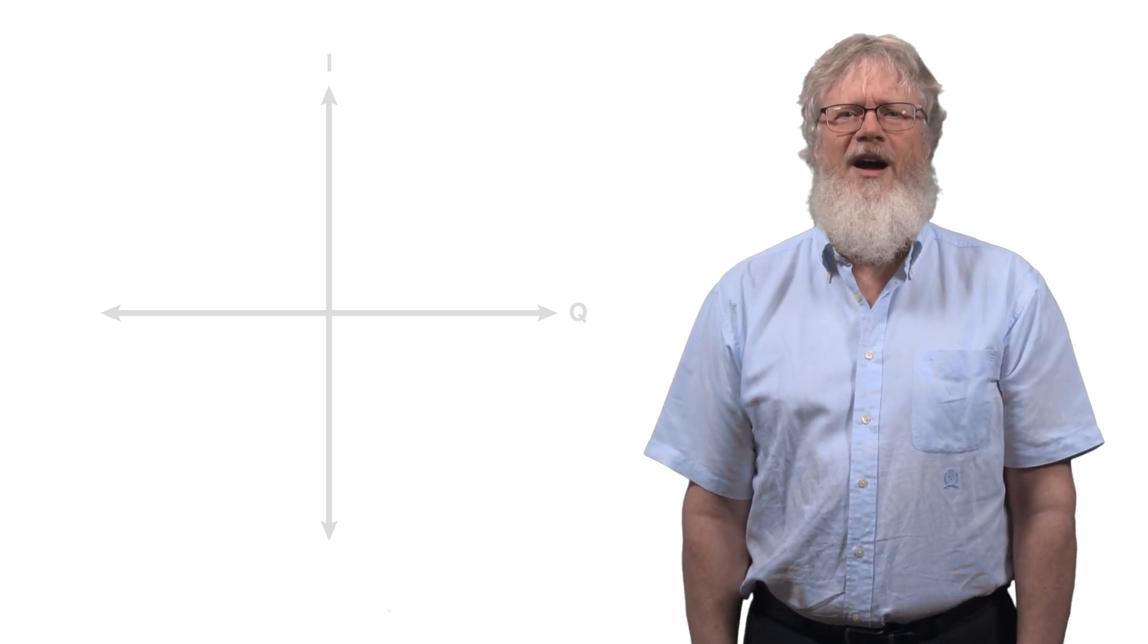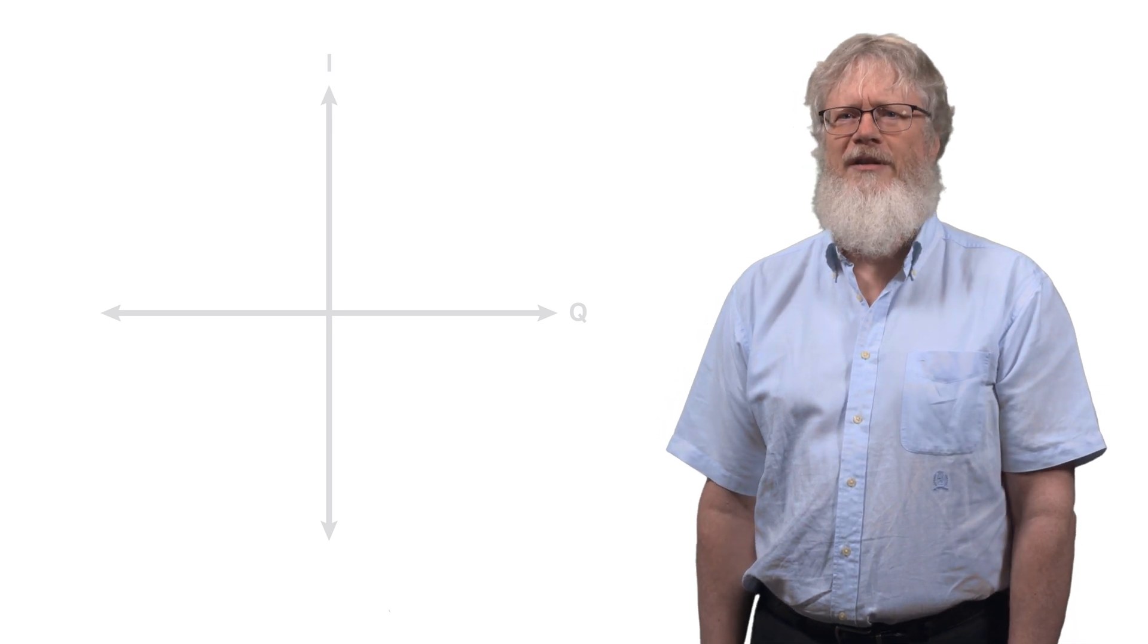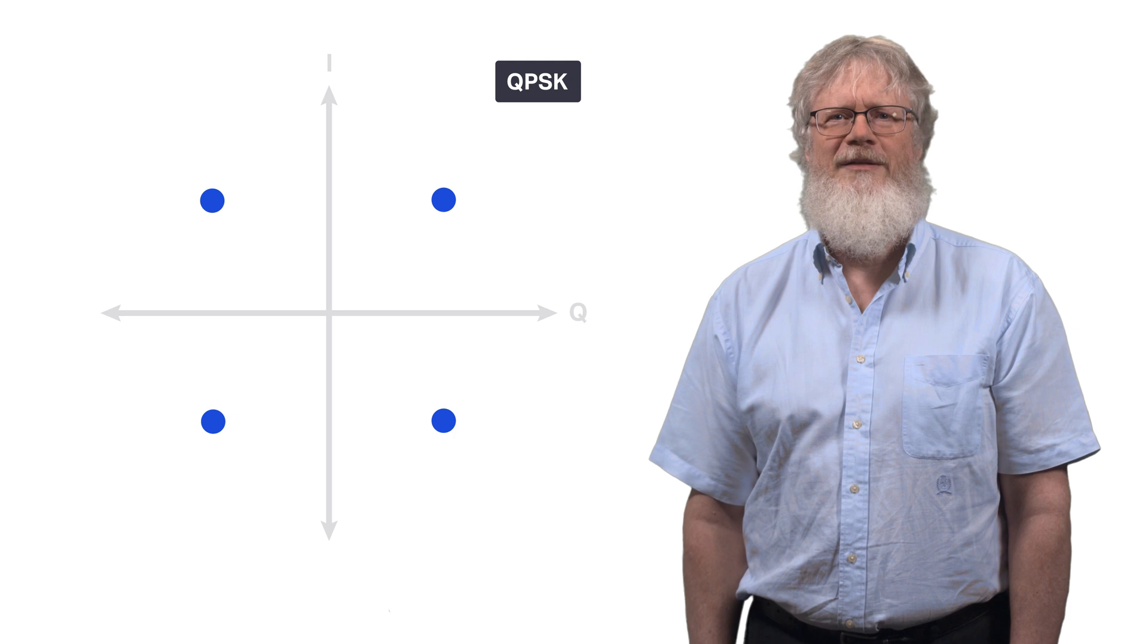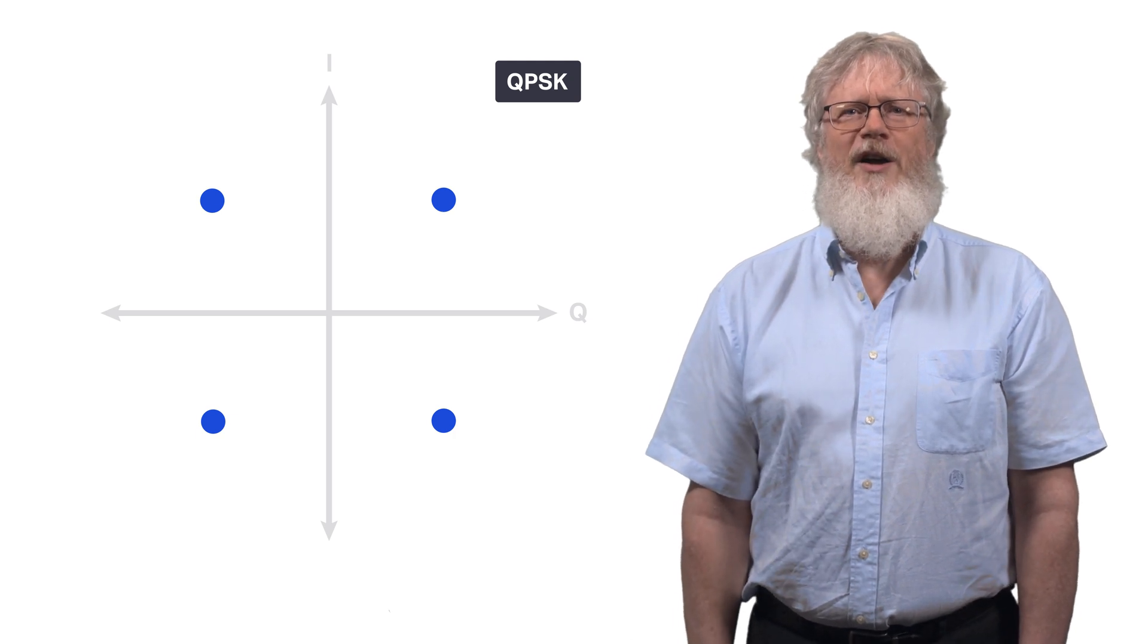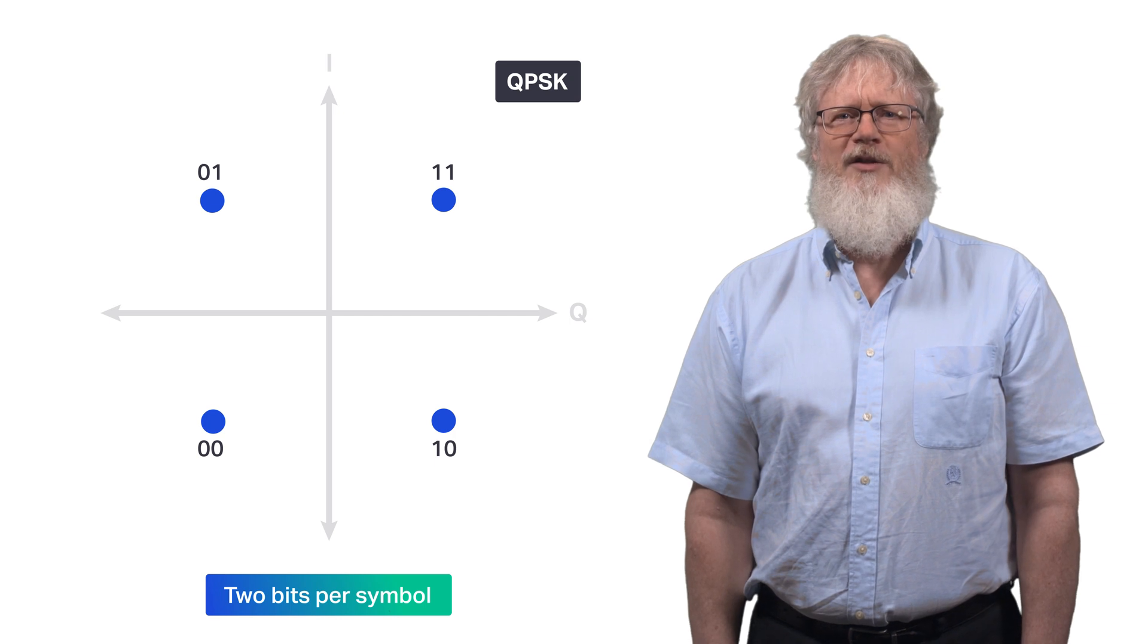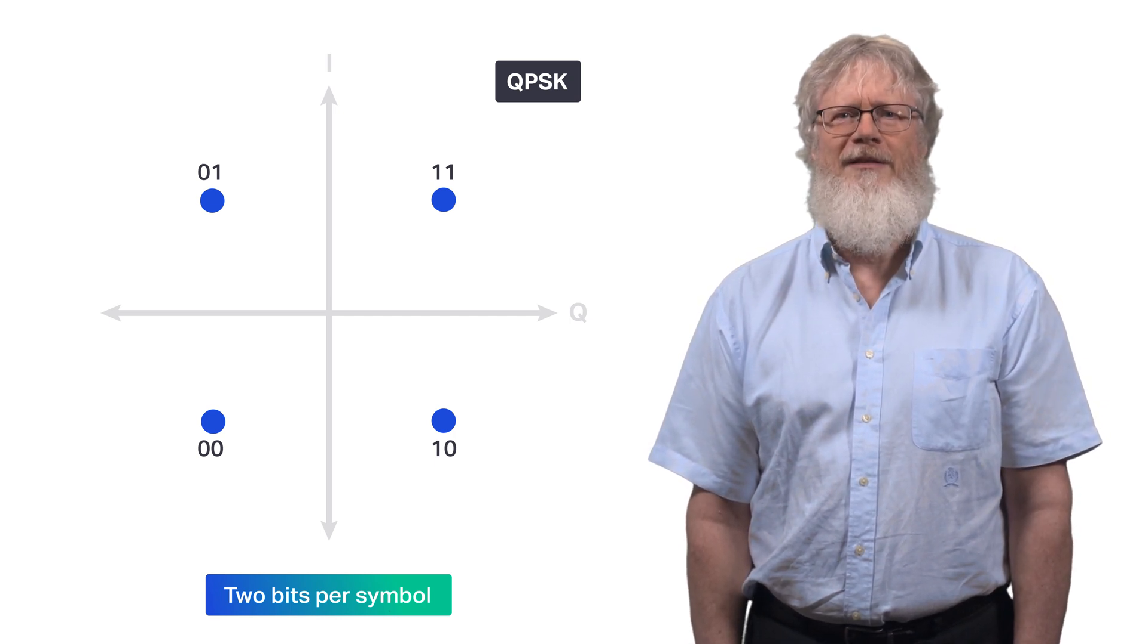On these two dimensions I can draw a constellation, a dictionary of points. For example, QPSK constellation. QPSK constellation allows two bits to be encoded. So by those two bits I choose which of those points to transmit in each symbol.